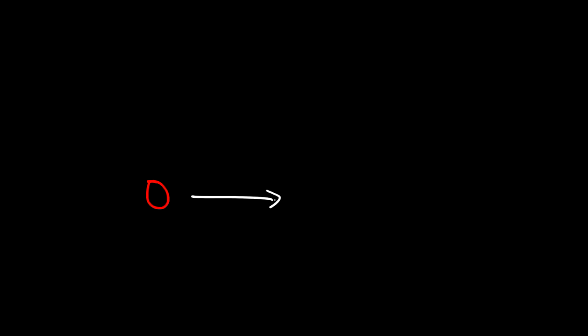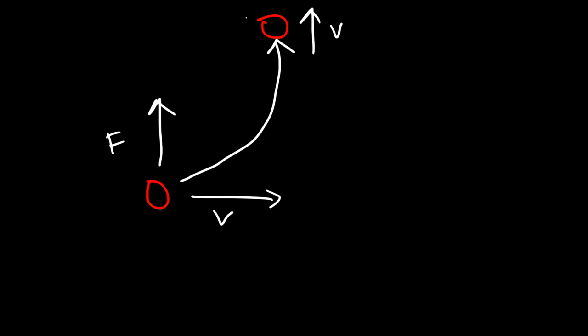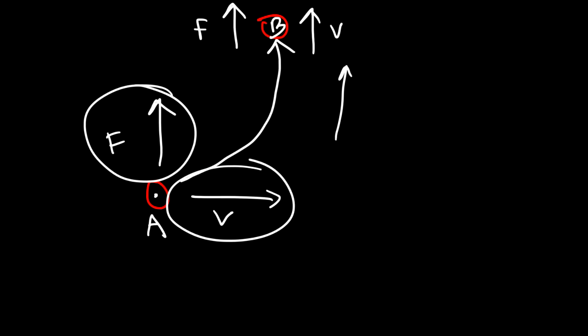What happens if an object is moving to the right but the force vector is perpendicular to it? Anytime the force and velocity vectors are perpendicular, the speed will not change — it won't speed up and it won't slow down. Rather, it's going to turn; it simply changes direction when force and velocity are perpendicular. It will turn in the direction of the force. Initially, at point A, it's not speeding up, but once it reaches point B, it's already speeding up as the vectors are no longer perpendicular.